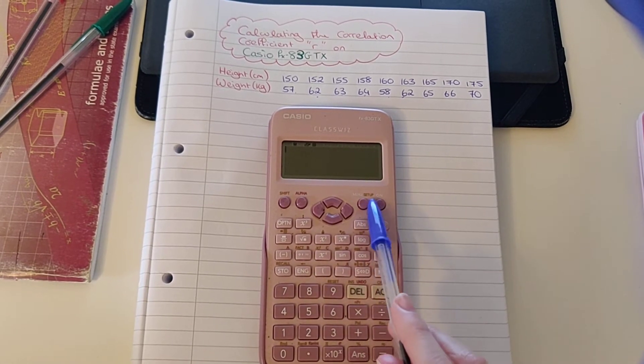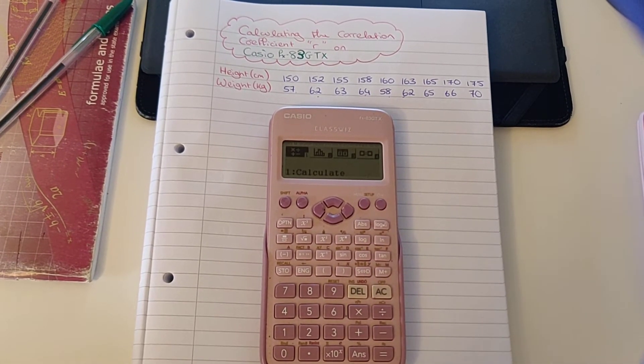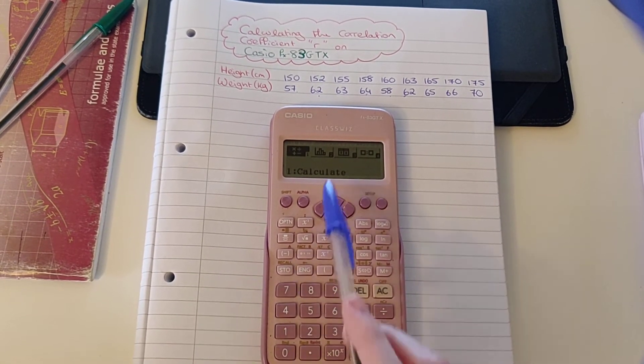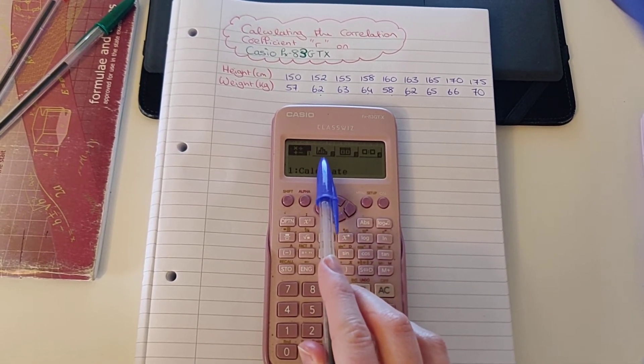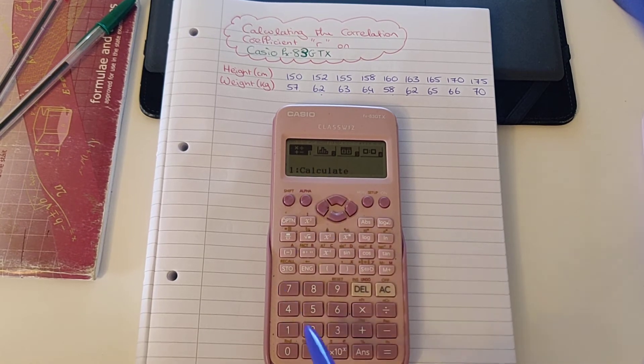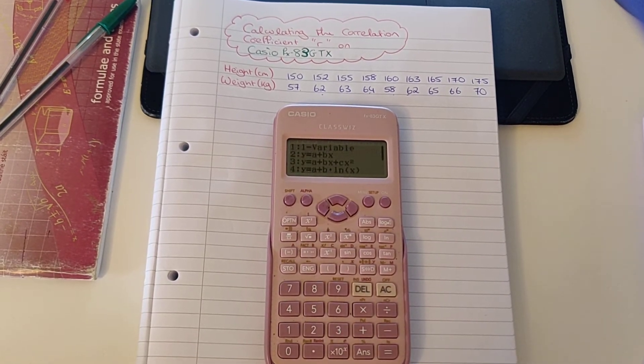The first thing we're going to do is press the menu button in the top right hand corner, and then we can see there's a little histogram symbol here. That shows me that pressing 2 will give me statistics.